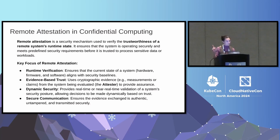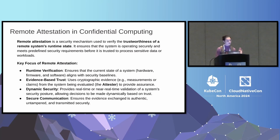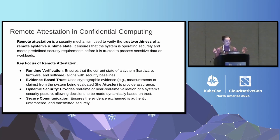Remote attestation is a security mechanism used to verify the trustworthiness of a remote system's runtime state. It ensures the system is operating securely and meets predefined security requirements before it processes that data or workload. The key focus of remote attestation, from RATS architecture, is runtime verification: ensure that the current state of the system — not just run state, but the hardware, firmware, and software — aligns with security baselines. Evidence-based trust uses cryptographic evidence. Dynamic security provides real-time or near real-time validation of the security posture. And secure communication ensures evidence exchanged is authentic, untampered, and transmitted securely.